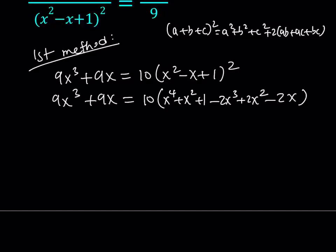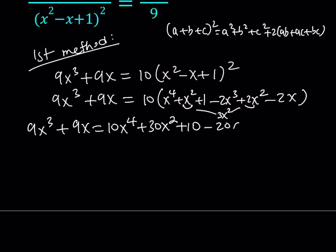Let's go ahead and distribute the 10. Let's see if there's anything that can be simplified inside the parentheses. We actually have these two expressions and we can add them up and make it 3x squared. So, let's distribute the 10. 10x to the fourth. I do have 3x squared so it's going to be 30x squared plus 10 minus 20x cubed minus 20x.